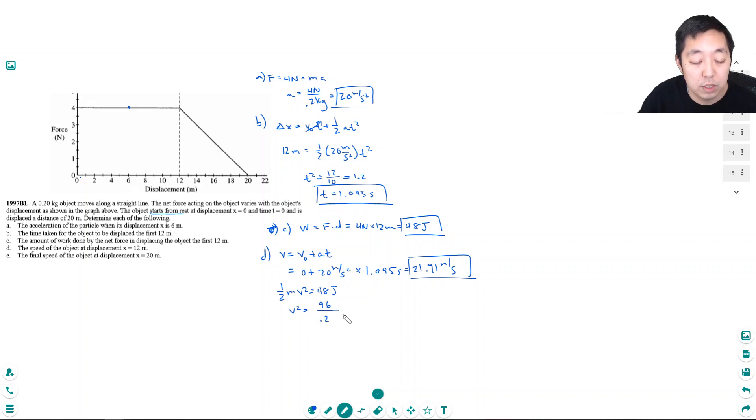So v squared is equal to 96 divided by m, which is 0.2 joules over kilograms. And so v would be the square root of 96 divided by 0.2. If I do that, I get 21.91 meters per second. So you could have solved this velocity either through kinematics, or you could have solved it through energy. Okay, either way.